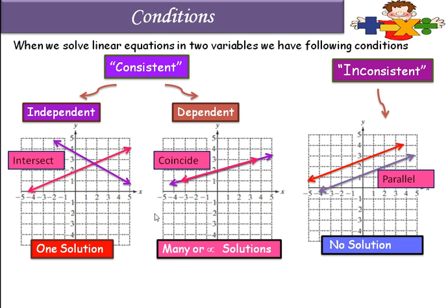So when we represent the linear equations on the graph, either they will intersect each other, or they will coincide, or they will be parallel. From that we can find out whether we have one solution, many solutions, or no solution. By observing their condition on the graph, we can determine the nature of the solution.